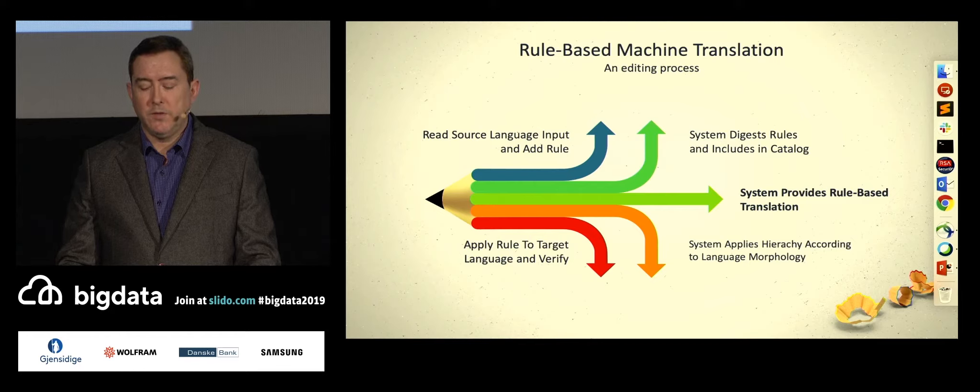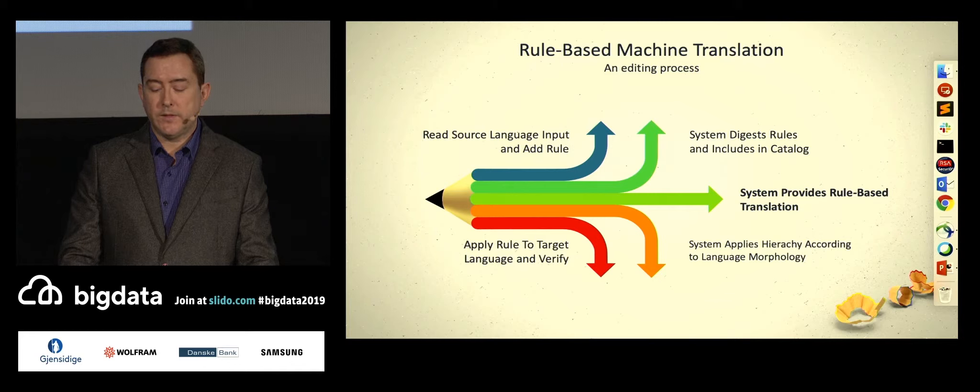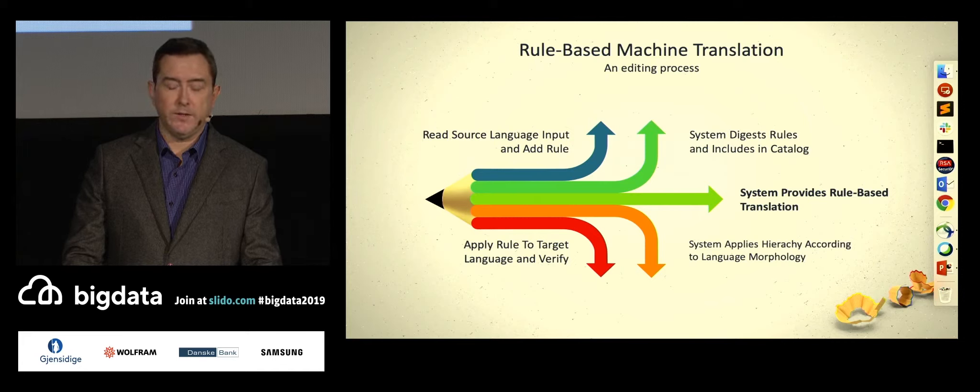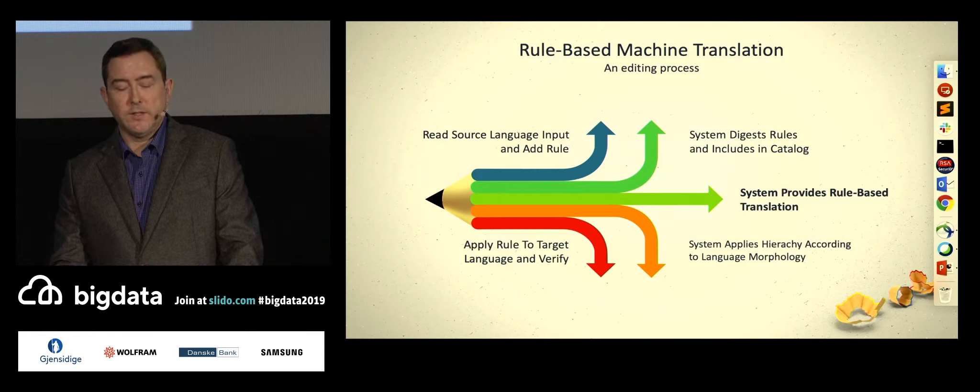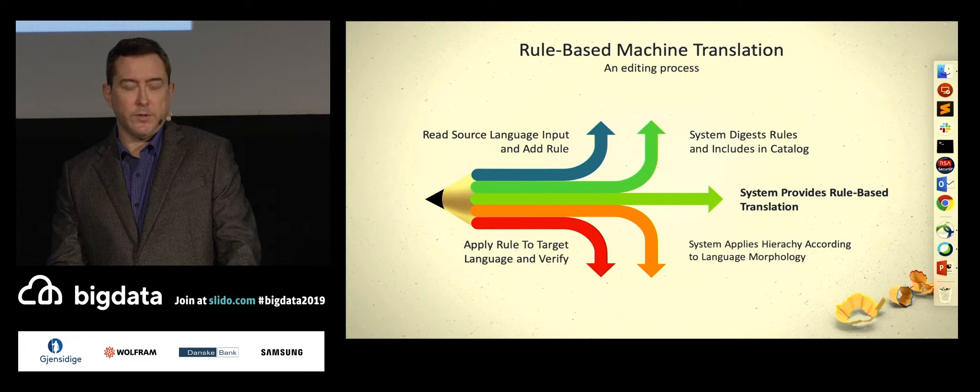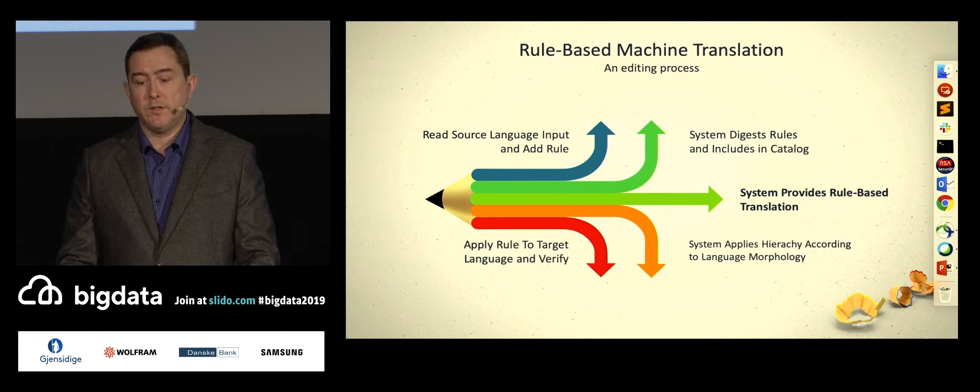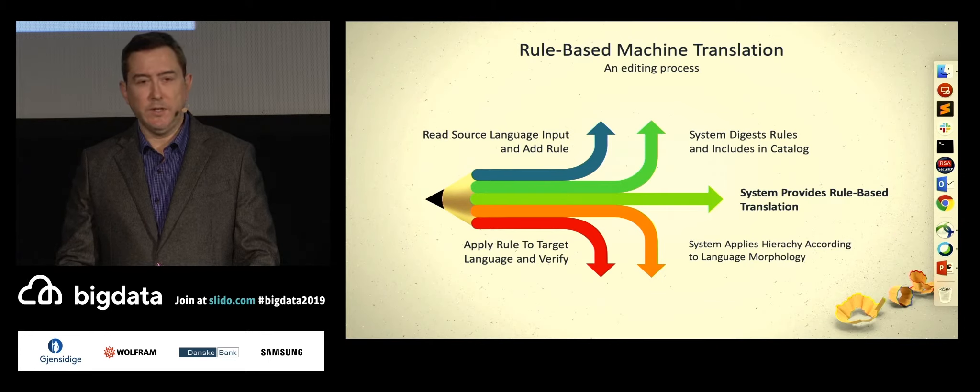Rule-based MT or RBMT, statistical MT or just SMT, and neural-based MT or NMT. The introduction to RBMT will be short as I would like to focus more on SMT and NMT today. But, I do not want to leave out RBMT completely as it serves as a good starting point for understanding how MT works in general. At a high level, this is what happens in an RBMT system. First, the rule writer, not always the user, adds a source and then a target rule and verifies it. Then, the system digests the rule into a database-like or catalog system to store the rule. The rule then becomes part of the bigger system where a hierarchy is applied according to the target language's morphology or grammatical construct. The system then provides a rule-based machine translation. This process continues forever because in RBMT, there isn't a central classifier-based model based on patterns. Meaning, not a lot of fun machine learning. Just rules.